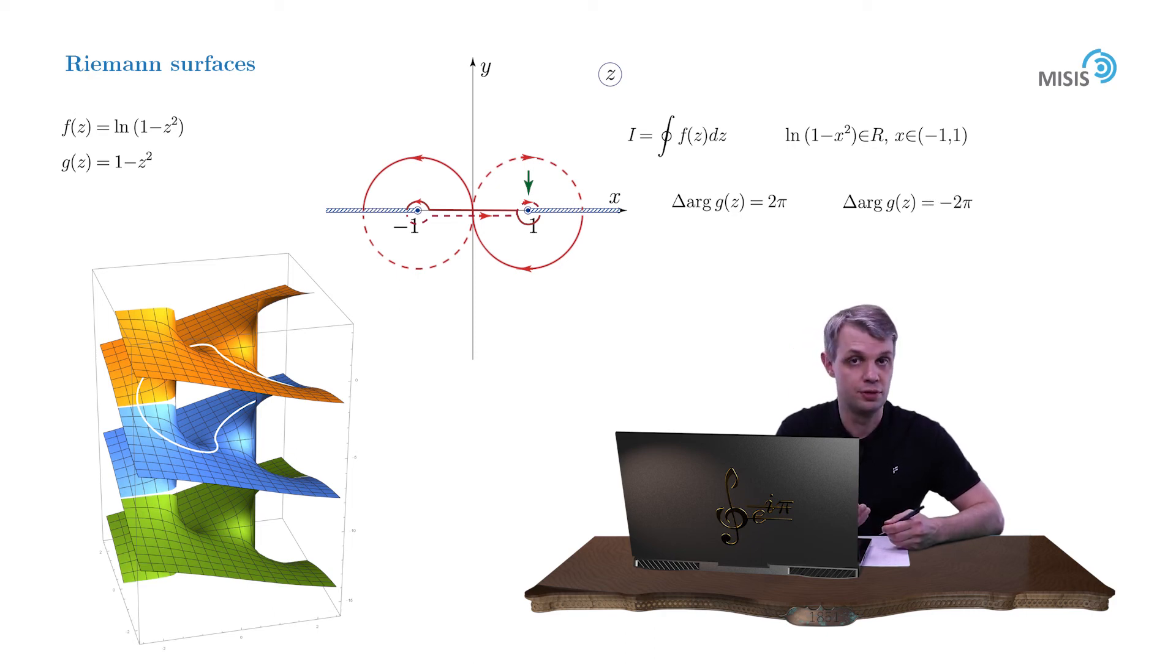Therefore returning to the original value of the function on the upper Riemann sheet. And this way the contour closes. The integrals along infinitesimal circles vanish as the radius of the circle tends to zero.